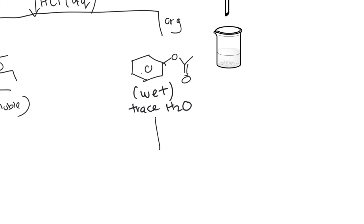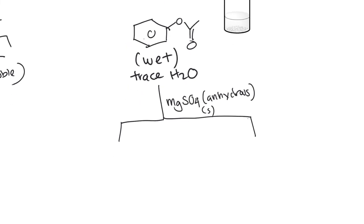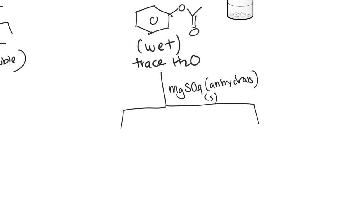So we're going to put over the down arrow, what we're changing and what we're adding. So we'll put MgSO4. It's usually anhydrous. It's a drying agent. It's a solid. And how do we separate a solid from a liquid? Not extraction, just filtration and filter.